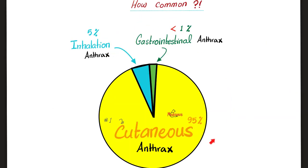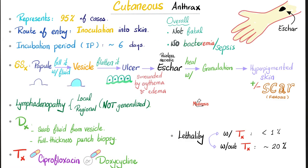Out of the three forms of anthrax, which one is more common? Hands down, the most common is cutaneous anthrax — 95% of anthrax cases are cutaneous anthrax. About 5% inhalation, and less than 1% gastrointestinal. Lucky for us, because the mortality rate of gastrointestinal anthrax can approach 100%. So we'll talk about cutaneous anthrax, then inhalation anthrax, then gastrointestinal anthrax.